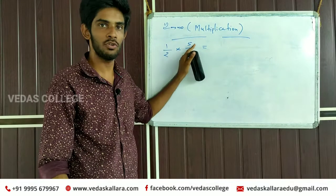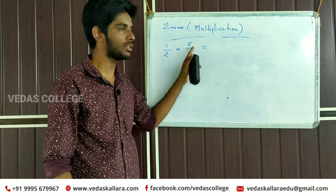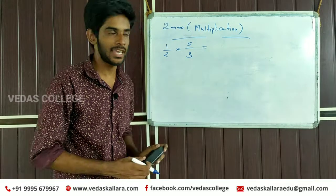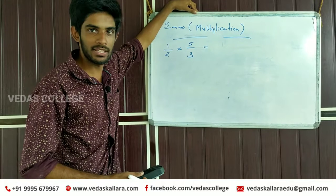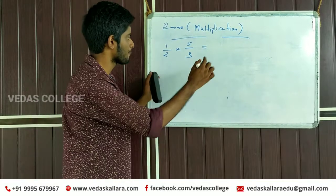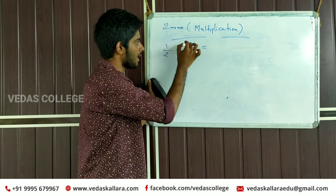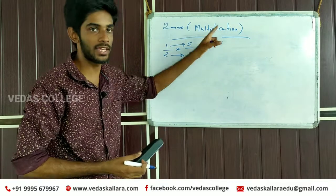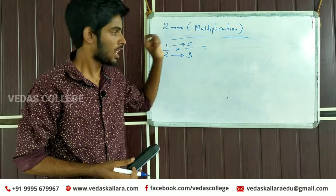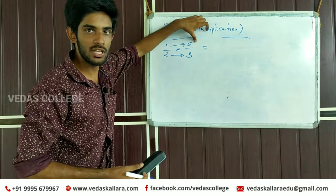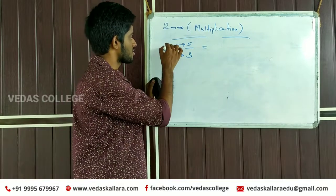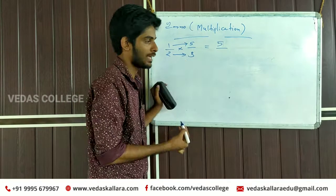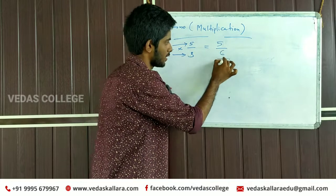One by two into five by three. That's why we have two. We have three. Look at this. When we say, we have another one. We have another one. That's why we have another one.